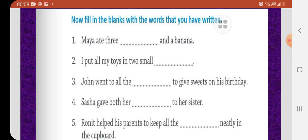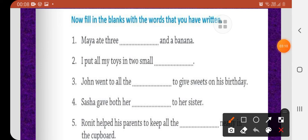And next exercise is now fill in the blanks with the words that you have written. So children, you have written words in the previous exercise. So children, you have to use that words here. Maya ate three dash and a banana. So you can write Maya ate three peaches. Maya ate three peaches and a banana. Maya ate three peaches.